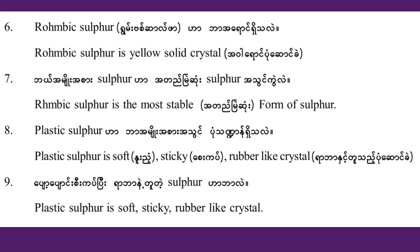Rhombic sulfur can exist in allotropic forms. Plastic sulfur can exist in allotropic forms. Plastic sulfur is soft, sticky, rubber-like crystal.